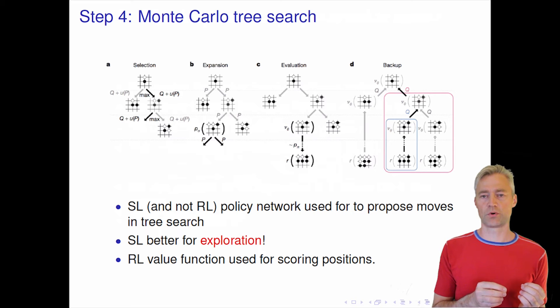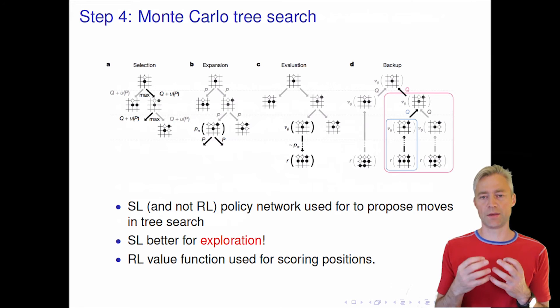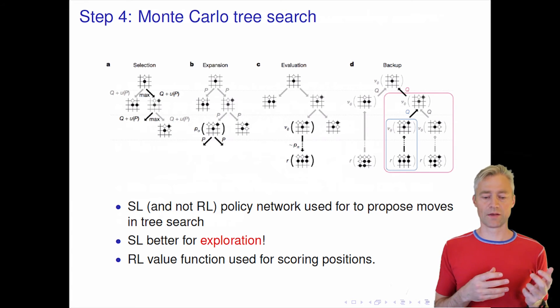What is really interesting here and also is an important aspect of reinforcement learning is that it turned out that the supervised learning policy network was better at generating proposals for moves than the reinforcement learning policy network. This is a little bit like a paradox, because if you think about it, why don't we use the reinforcement learning policy network that's actually a better player? You can say that the supervised learning policy network is not as good a player, but it's a more imaginative player, right? It explores the potential positions better than the reinforcement learning.